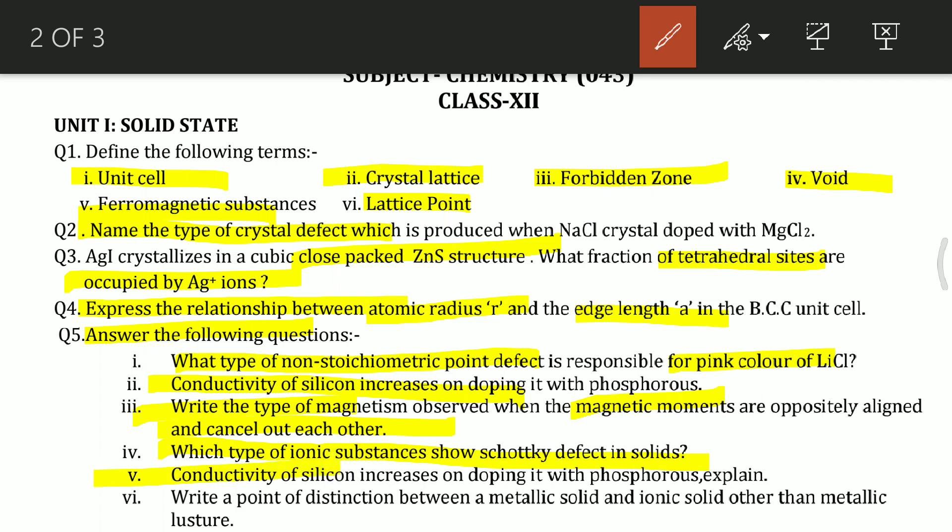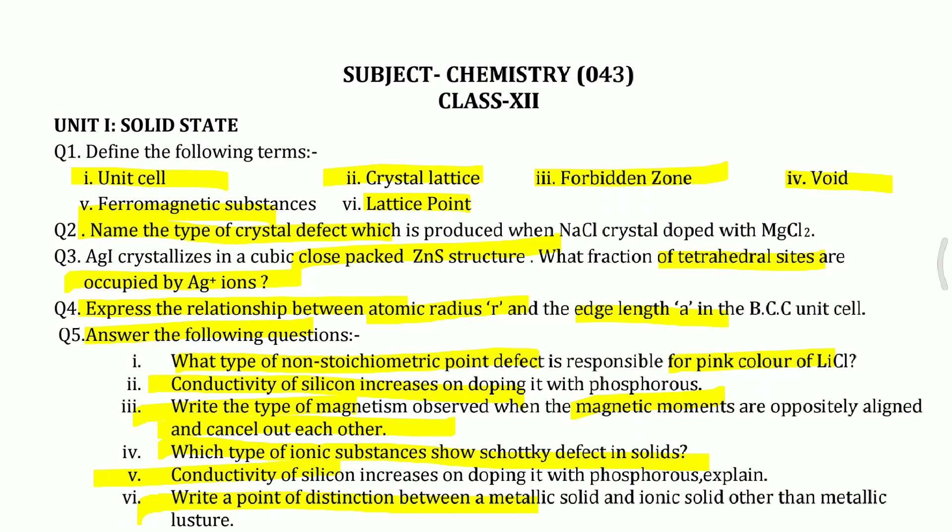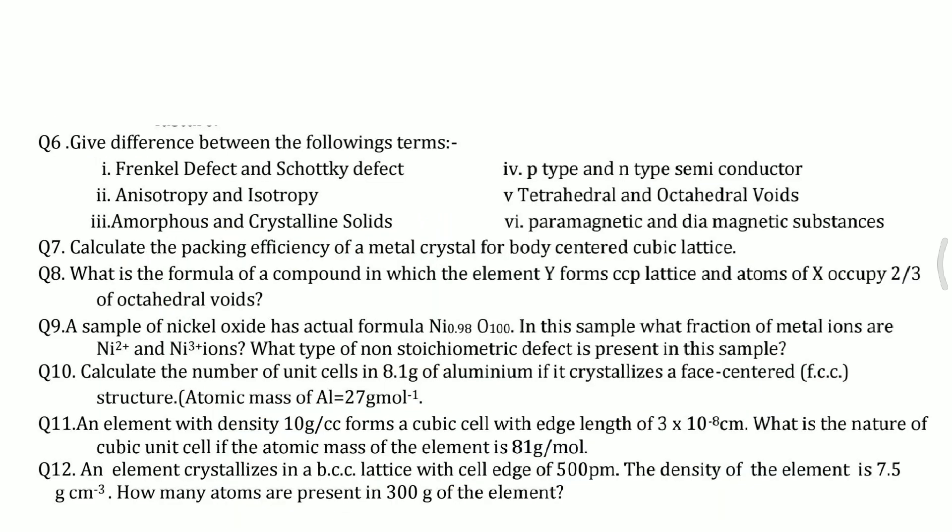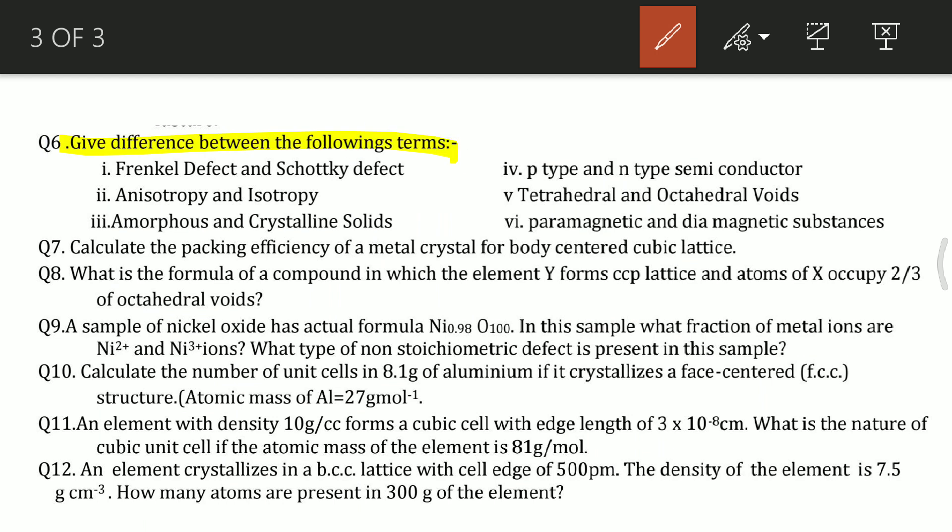Why does conductivity of silicon increase on doping it with phosphorous? We have to explain this question. Write a point of distinction between metallic solid and ionic solid other than metallic luster. You have to tell the distinction between metallic solid and ionic solid.